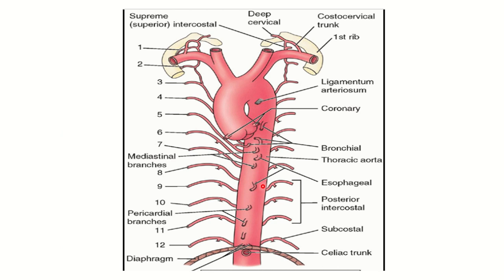Looking at the vessels of the thorax, we can see the ascending aorta, the arch of the aorta, and then the descending thoracic aorta. The branches of the descending thoracic aorta include: the bronchial artery, the esophageal artery which supplies the esophagus, the posterior intercostal arteries, the subcostal artery, the pericardial artery, and the mediastinal artery. These are all branches of the descending thoracic aorta supplying different parts of the thorax.